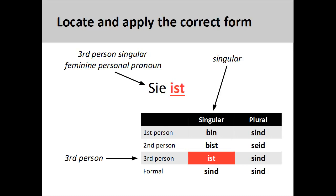Although it may be difficult to memorize the four principal parts of irregular and strong verbs, with repeated practice you will begin to notice patterns that will help you. The main thing is not to give up and to keep trying.